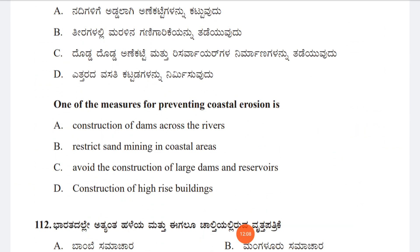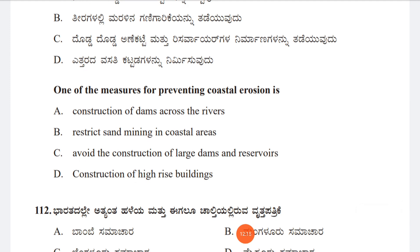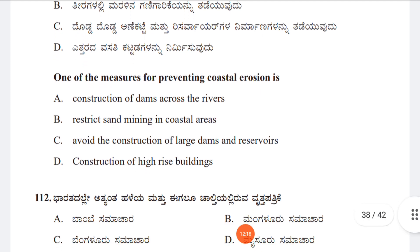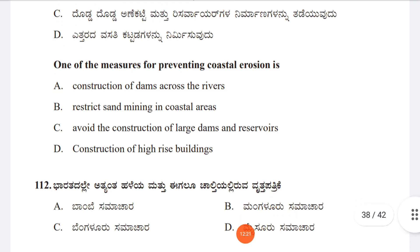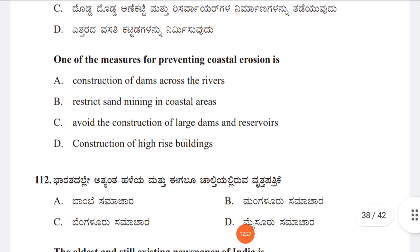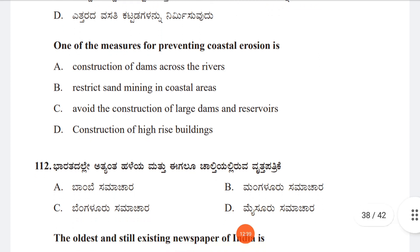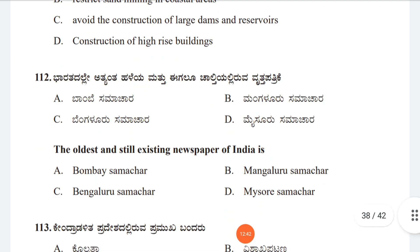Question 111: One of the measures for preventing coastal erosion is Option A: Construction of dams across rivers, Option B: Restrict sand mining in coastal areas, Option C: Avoid construction of large dams and reservoirs, Option D: Construction of high-rise buildings. The answer is Option B, restrict sand mining in coastal areas.